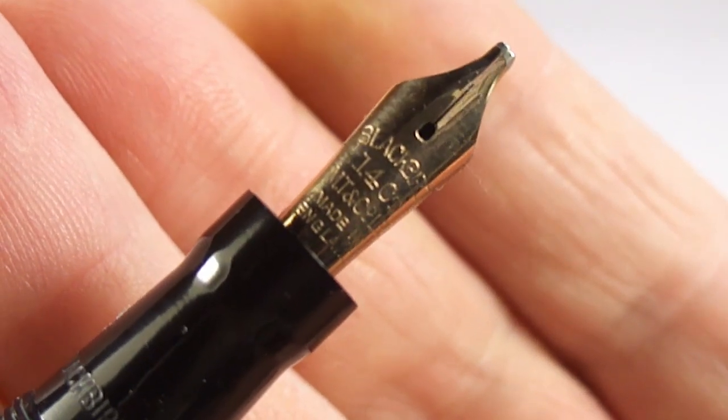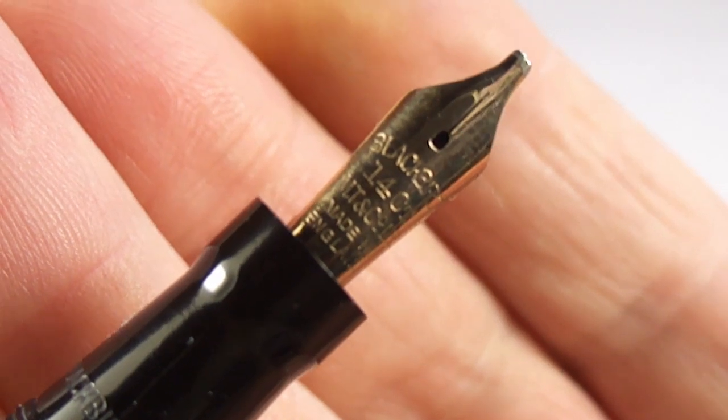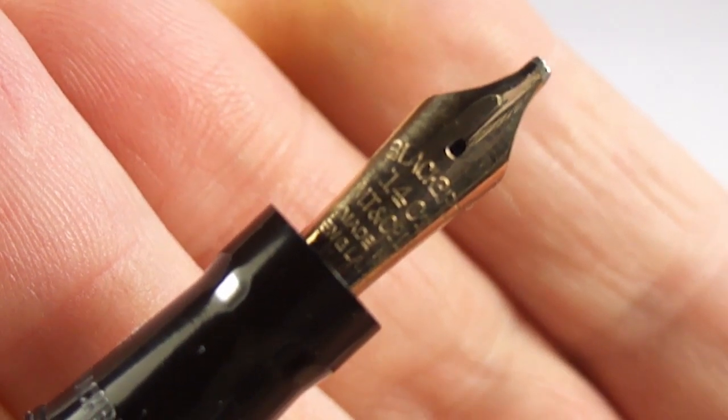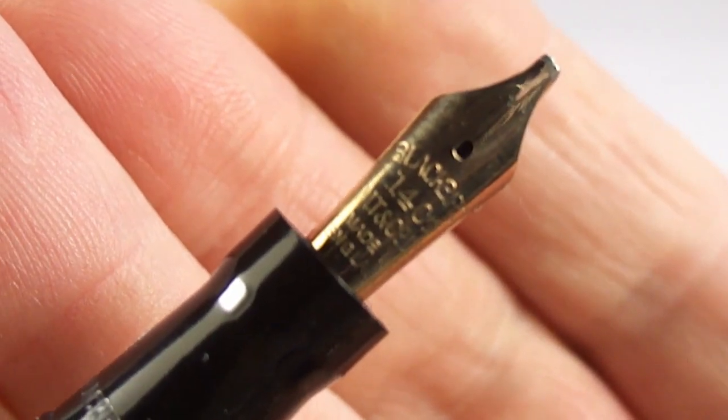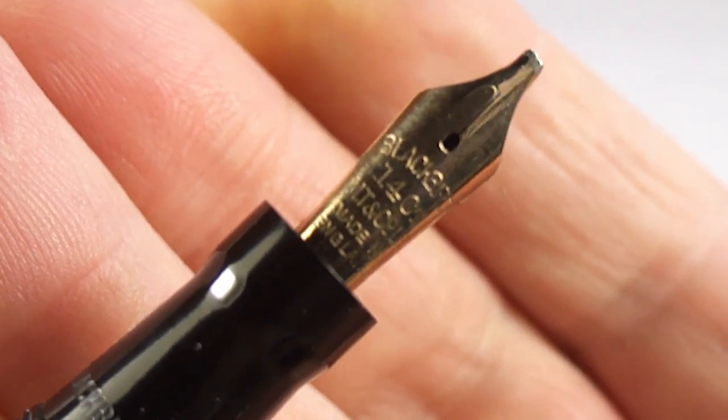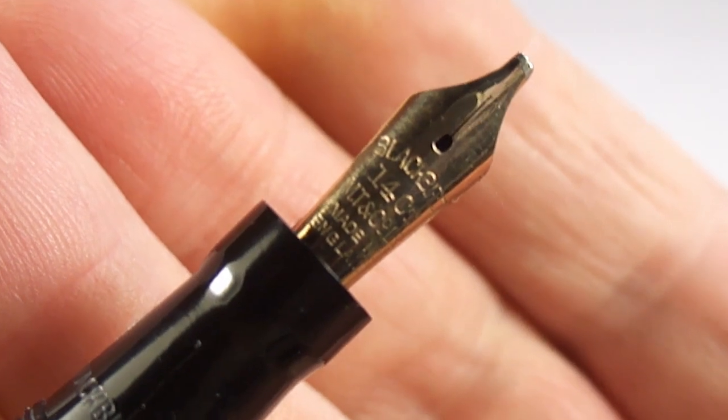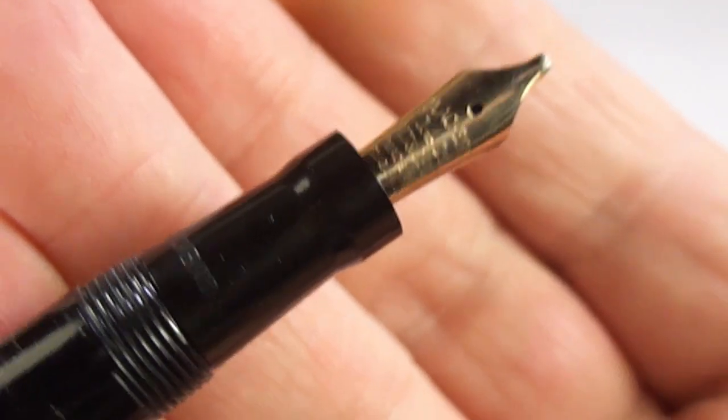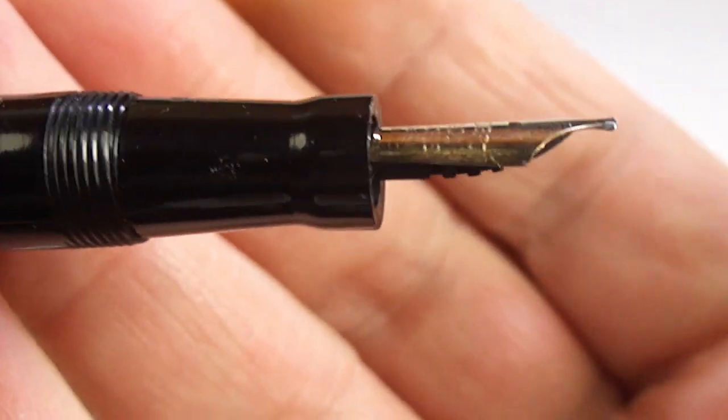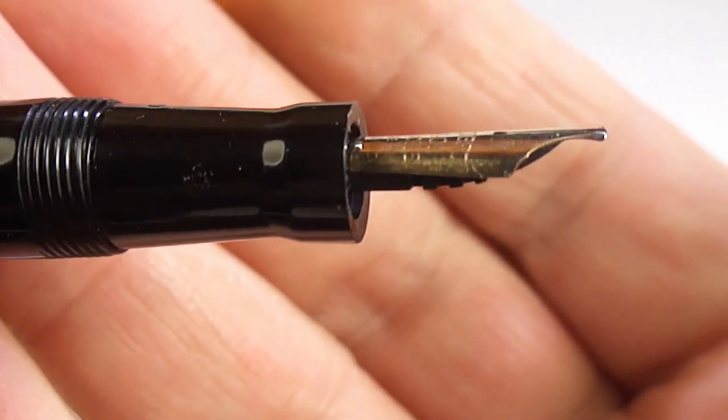But take a look at the tip there. Yep, it's got a lovely broad, yeah, I think it's a stub, a stub nib. Very unusual, very sought after. And this particular customer likes unusual nibs. So I'm sure he's going to be more than happy with this one.